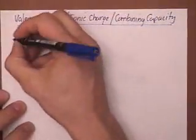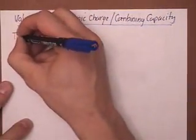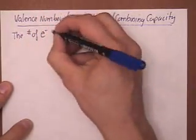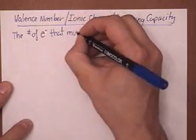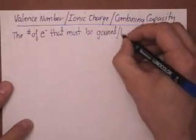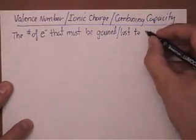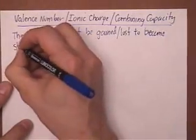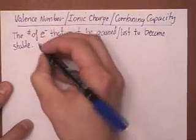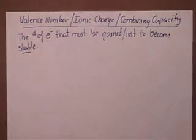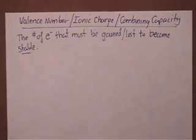All of these things refer to the number of electrons that must be gained or lost to become stable. Remember, everything wants to become stable — they would rather be stable above everything else. So we need to track down the number of electrons you're going to have to gain or lose to become stable.